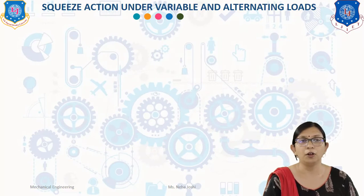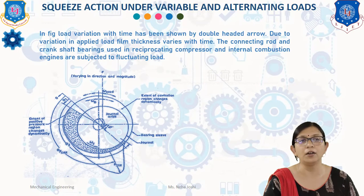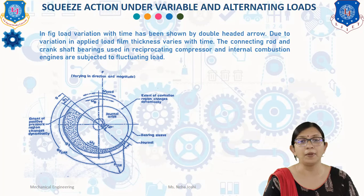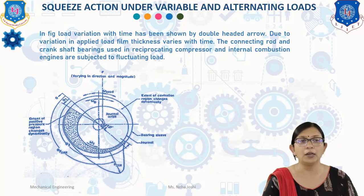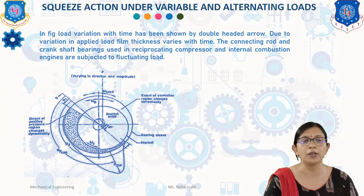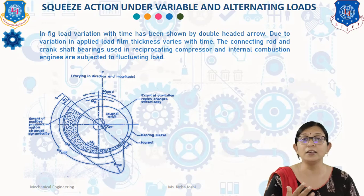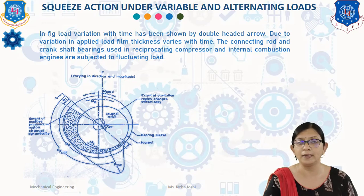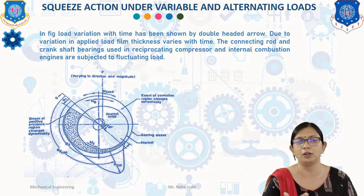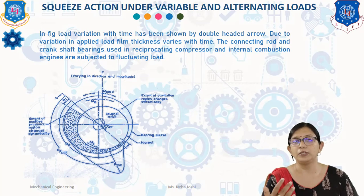First, we will understand squeeze action under a variable and alternative load. In this diagram, the load variation with time has been shown. Due to variation in applied load, film thickness varies with time. The connecting rod and crankshaft bearing used in reciprocating compressors and internal combustion engines are subjected to fluctuating loads. It is interesting to note that the crank angle varies with time, and therefore load varies with time.